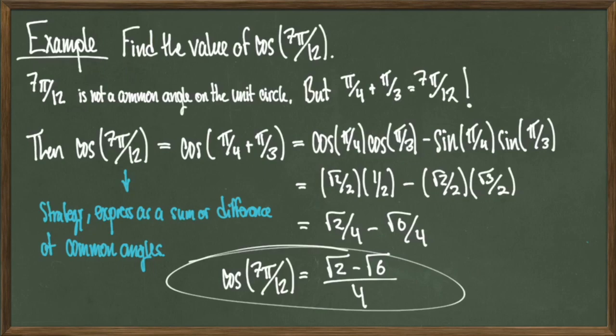The strategy here is to look at a non-common angle on the unit circle and see if it can be written as the sum or difference of common angles — which we find it can. Once we have that, simply apply the sum or difference identity and evaluate.